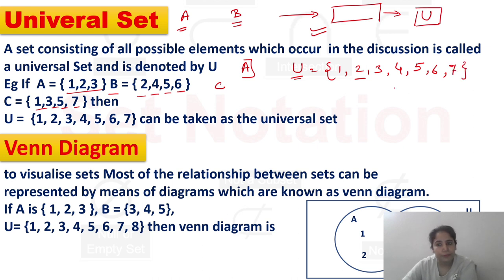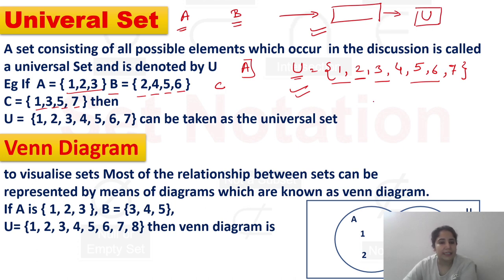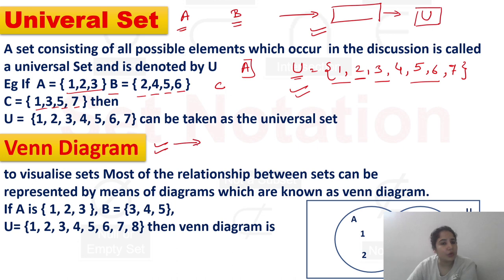तो यहाँ पर पूरा का पूरा यह Universal Set हो जाएगा, और आप इसको बात कर सकते क्योंकि यही सारे possible outcomes थे जो आपने A, B और C set में बात की थी — that would be known as Universal Set. अब इनका representation किया जा सकता है through diagram, उनको बोला जाता है Venn Diagram — Venn Diagram is nothing but the visualization of these sets.